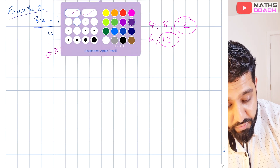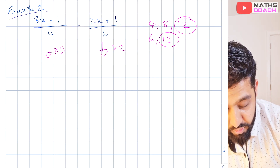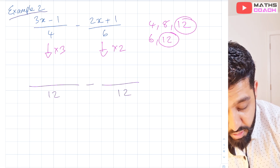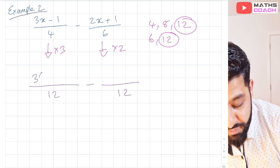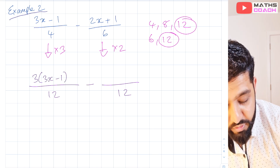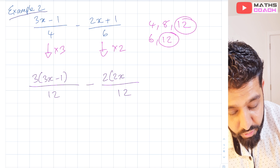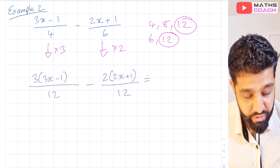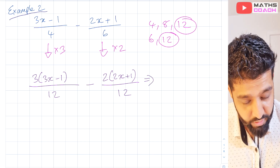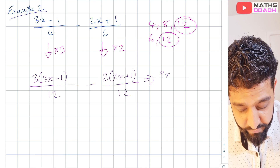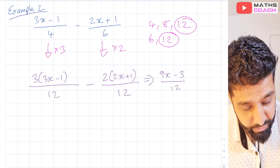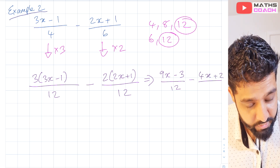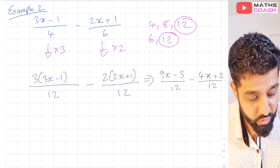We apply those multipliers to both the numerator and denominator of each fraction. That gives us 12 on each denominator. For the numerator of the first fraction we do 3 times (3x minus 1), and for the second we do 2 times (2x plus 1). Expanding those brackets: the first fraction gives us (9x minus 3) over 12, and the second gives us (4x plus 2) over 12.